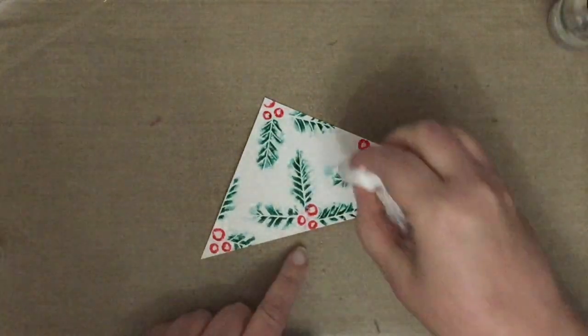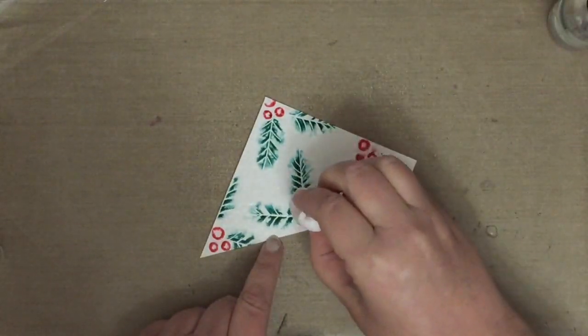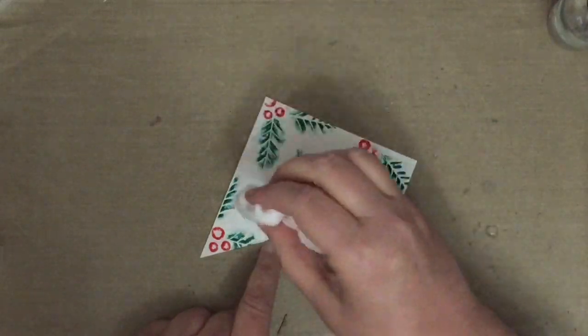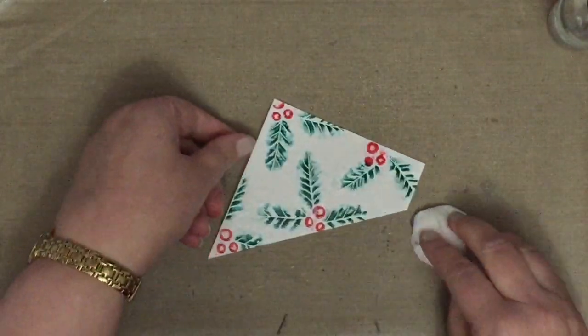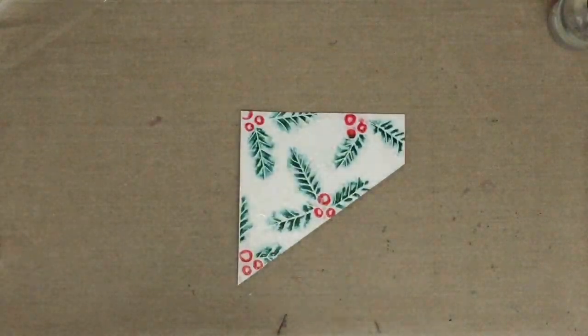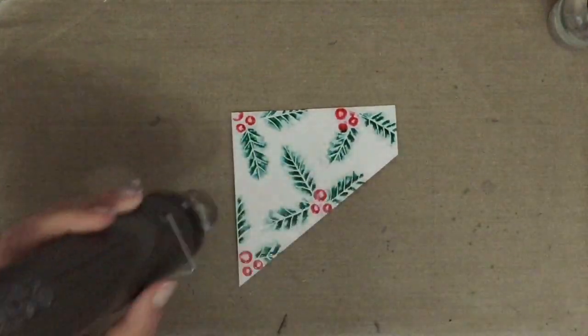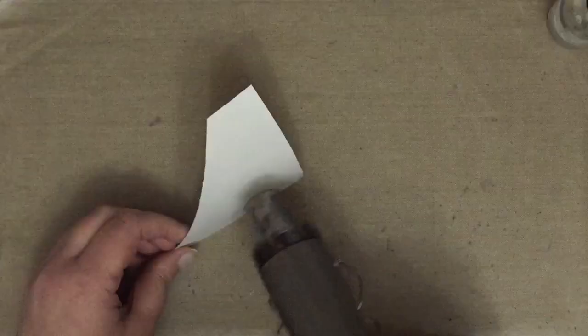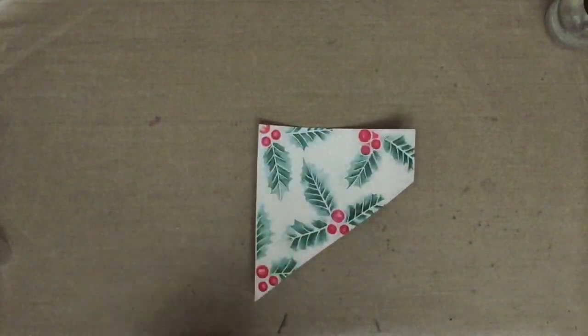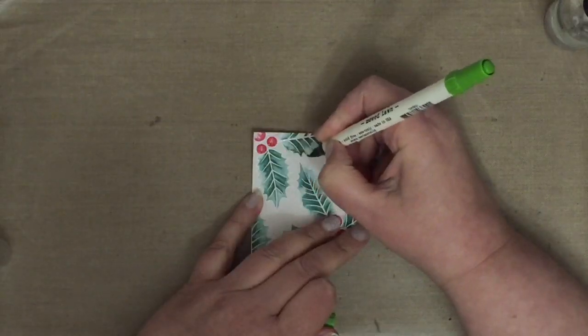So I'm just using a baby wipe to mop up some of the excess color that's spread, and at the moment it looks like I've done an okay job of doing that.